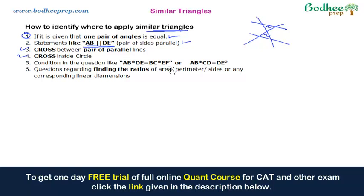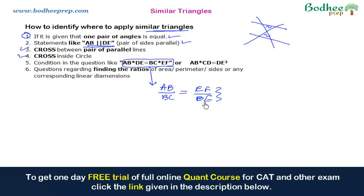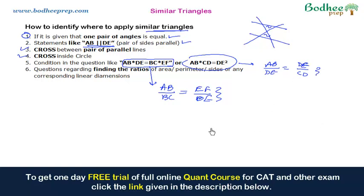The fifth hint: if a question gives something like AB × DE = BC × EF, rearranging gives AB/BC = EF/DE, indicating sides in proportion — a signature of similar triangles. This can also appear as AB/DE = DE/CD. The sixth hint: questions asking for ratios of area, perimeter, or any other linear dimension often require the concept of similar triangles to obtain the required ratios.